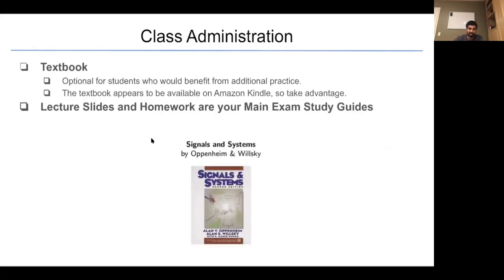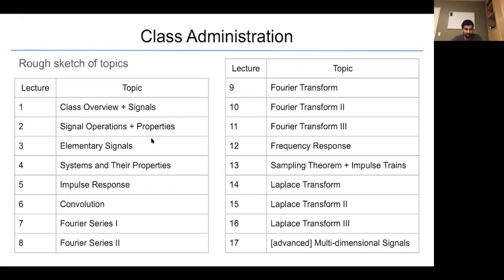The textbook is optional for students who would benefit from additional practice. You can think of this as drill questions. The textbook appears to be available on Amazon Kindle, so feel free to take advantage of that deal. However, lecture slides and homework are your main exam study guides. And if you master what's in the homework, if you master what's in the lecture slides and can follow the discussions on Piazza, you should be in very good shape to get an A in the class. Here is a rough sketch of topics that we will go into. We have completed lecture one where we go over the class overview and what signals are. And now we will go into deeper detail in signal operations, elementary signals, and systems. If you'll note, we have about five lectures on the Fourier analysis and transforms. And we also have three lectures on the Laplace transforms. These are major concepts in the class.